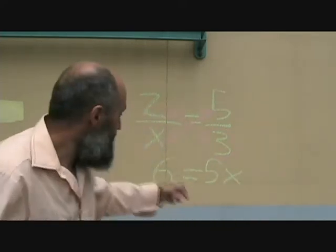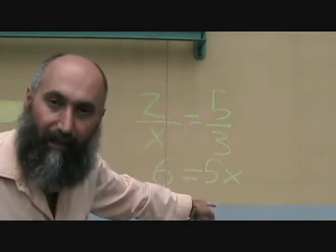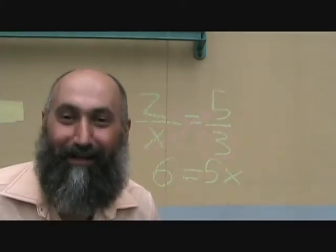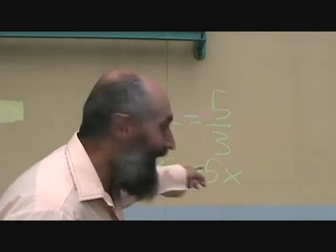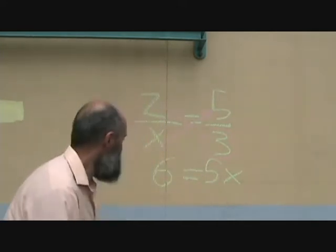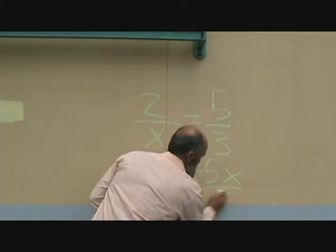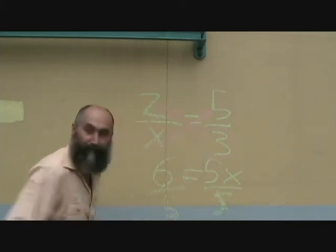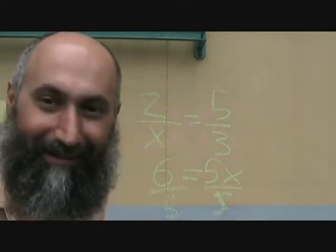Now you haven't finished solving this problem, you've got to get x by itself. So all you do is divide by 5 on both sides.